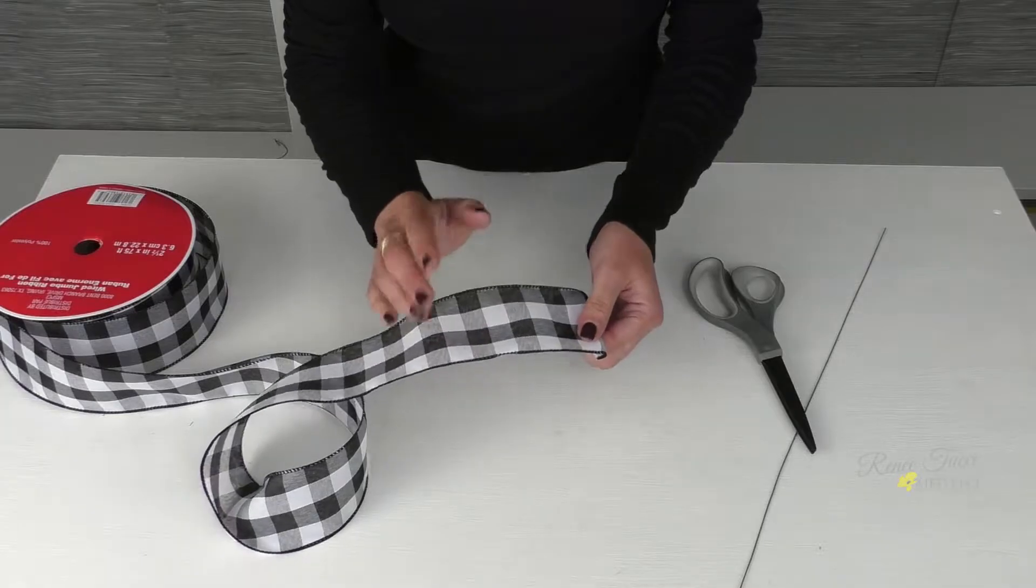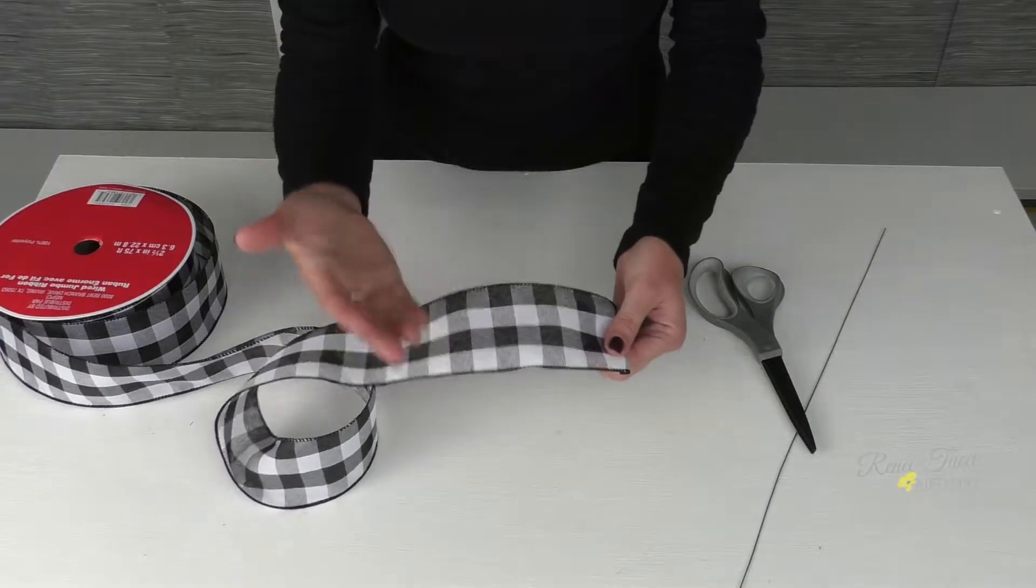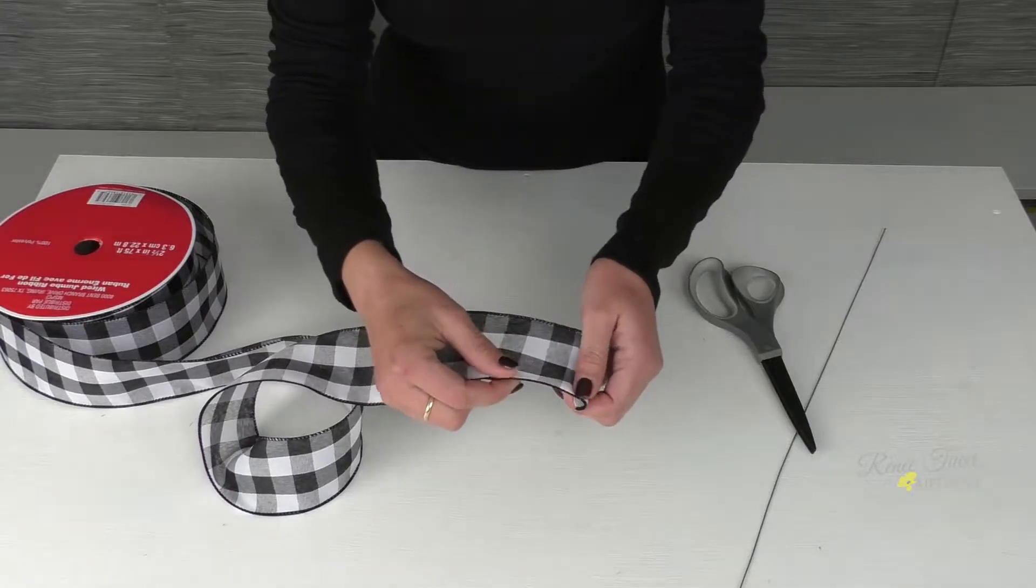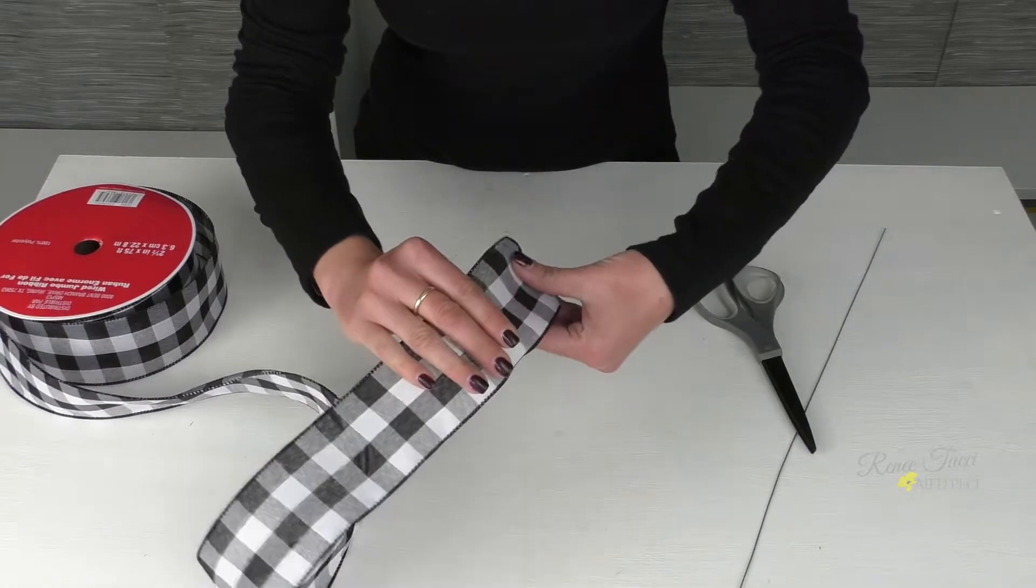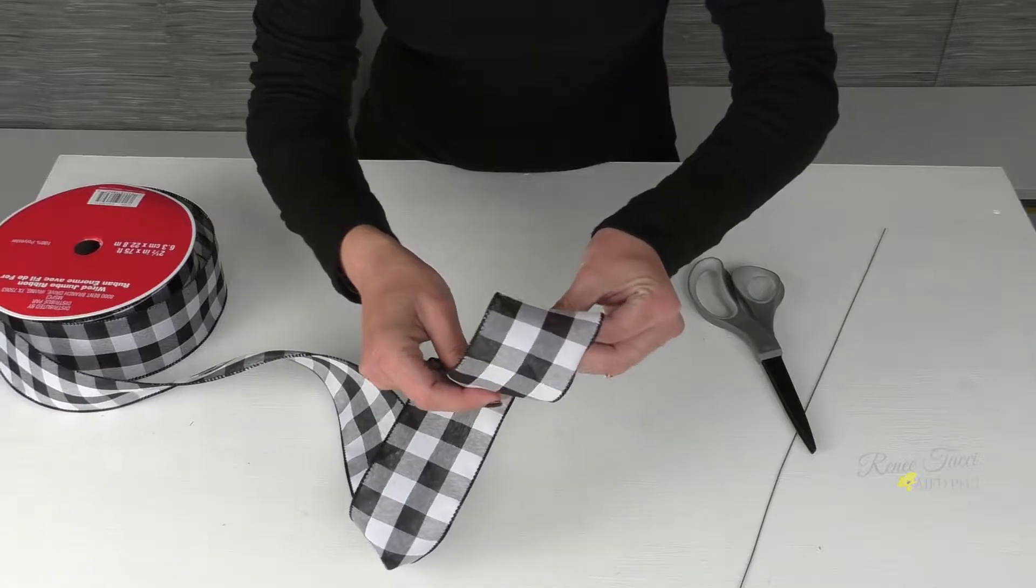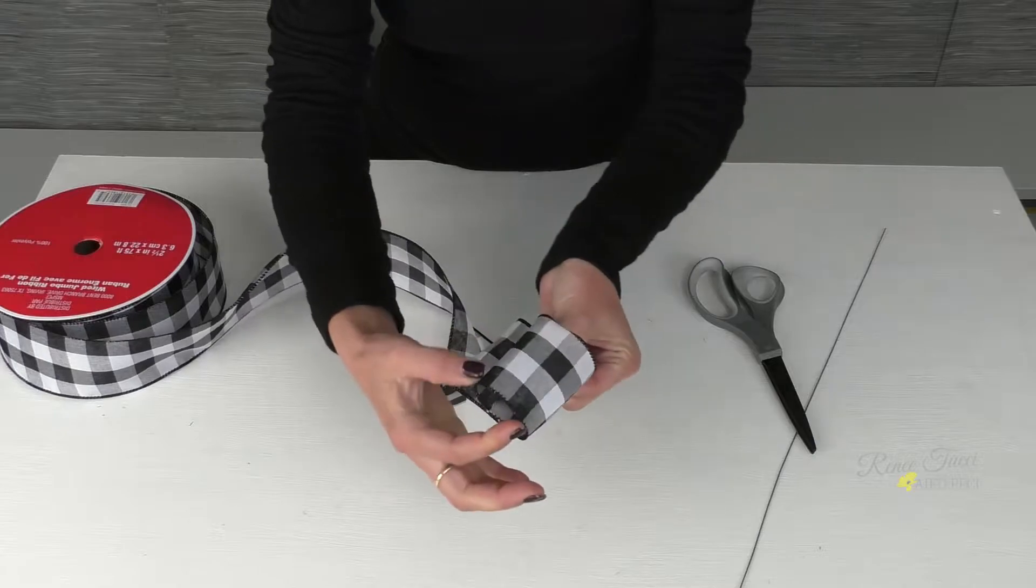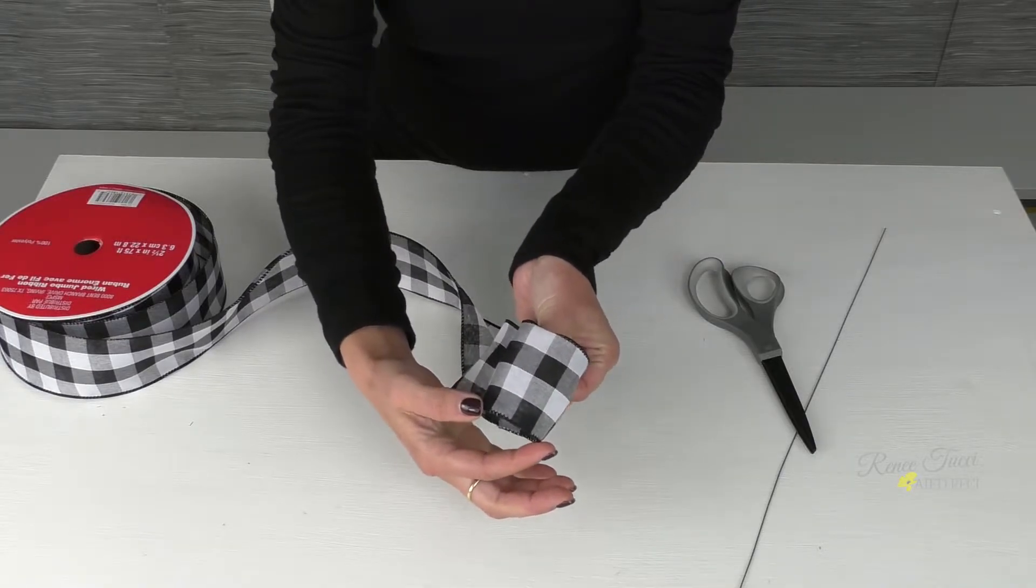So let's start by creating the center loop. That will get us our foundation for the bow, and then we'll move to the side loops. So I take my ribbon and I wind it around back to the starting point. Now, that is the size of my center loop.